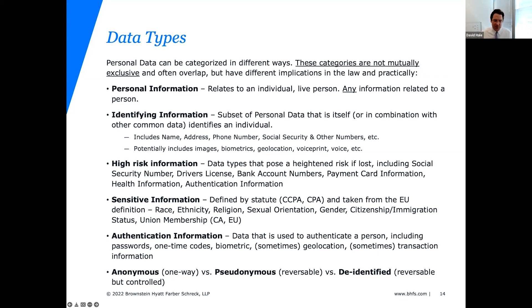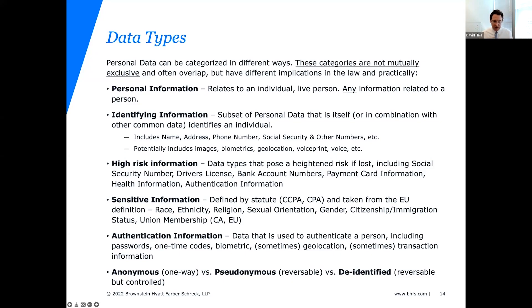A good example is a physical address. In databases, addresses are often broken into component parts — line one, line two, city, state, zip code. Any one of those elements by itself may not identify an individual, but put them together and it does — or at least identifies a household. It's a bit too clever to call a zip code non-identifying when it's always used in conjunction with other information that collectively does identify an individual. Social security numbers, by contrast, are obvious identifiers on their own.